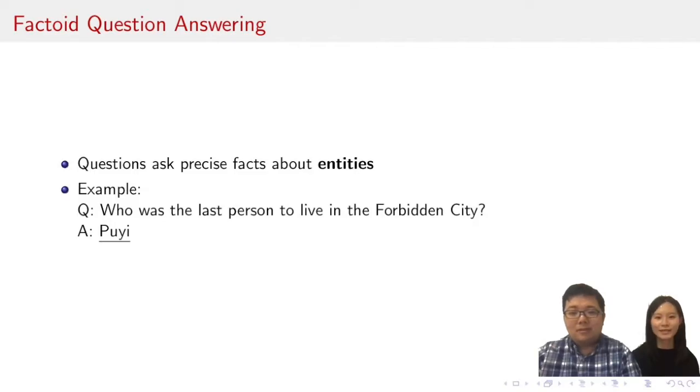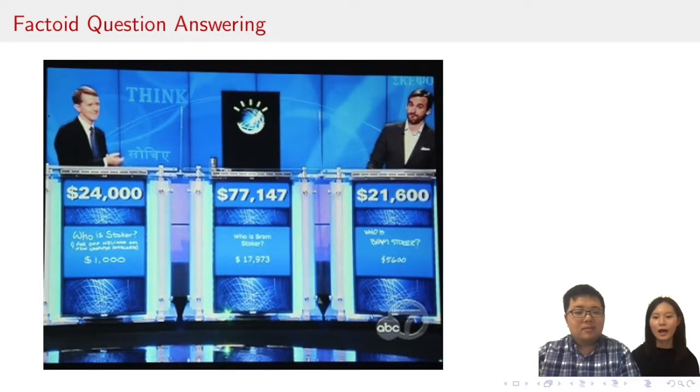Question answering is a common natural language processing application. One flavor of QA is factoid question answering, where machines answer questions containing precise facts about entities. For example, if a human asks who was the last person to live in the Forbidden City, a machine realizes that the question is talking about a resident of the Forbidden City, then reasons to determine who its last resident was, and gives the answer, Pu Yi. About a decade ago, IBM Watson beat humans in the factoid question answering competition, Jeopardy, using a combination of raw text and knowledge graph.